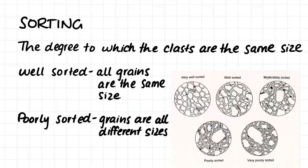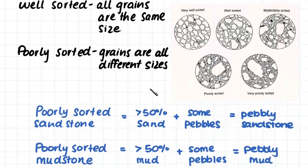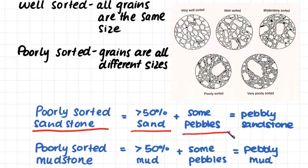The next thing we will have a look at is the sorting of the clasts. Sorting means the degree to which the clasts are all the same size. Well-sorted sedimentary rock is one in which all the grains are the same size. Poorly or very poorly sorted sedimentary rock is one in which all the grains are different sizes. If we have a poorly sorted sandstone, it must have at least 50% sand grain sized particles, because otherwise it would not be classified as a sandstone. If on top of this it had some pebbles, we would call it a pebbly sandstone. Same with a poorly sorted mudstone — if it had some pebbles in it, we would call it a pebbly mud.